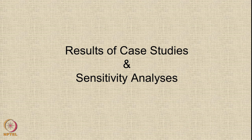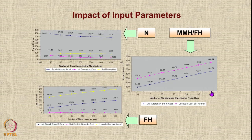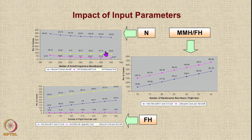Looking at case studies and sensitivity analysis: the cost breakup from literature and the cost breakup from Falcom are similar, validating the model. One graph shows the y-axis as cost in crore rupees and the x-axis as number of aircraft acquired or manufactured. The black line is life cycle cost per aircraft; the crimson line shows unit development cost and unit flyaway cost varying from 100 to 86 crores as the number of aircraft increases.